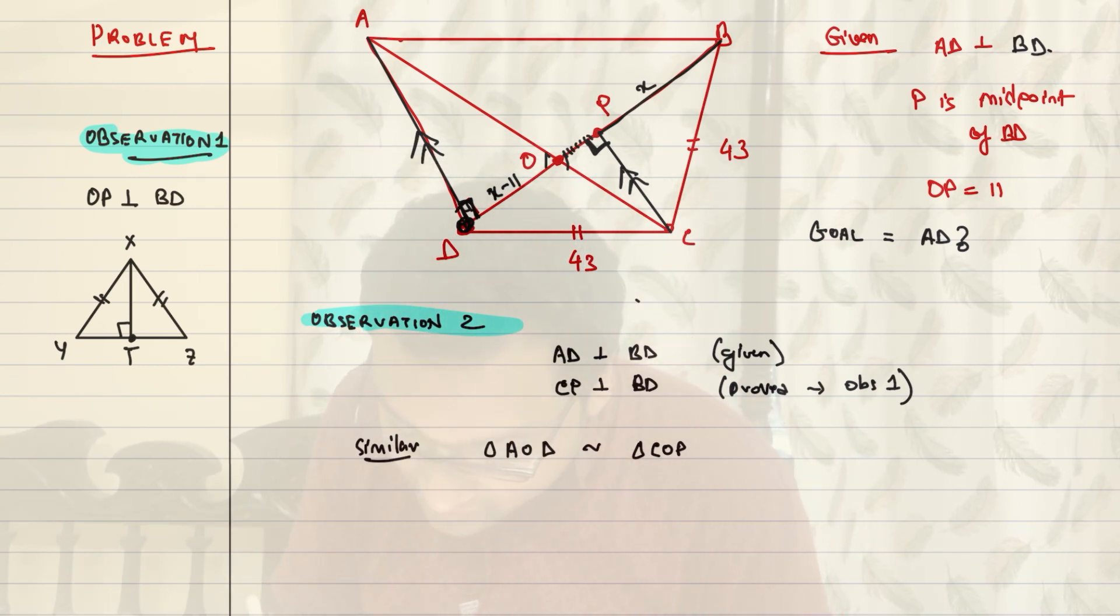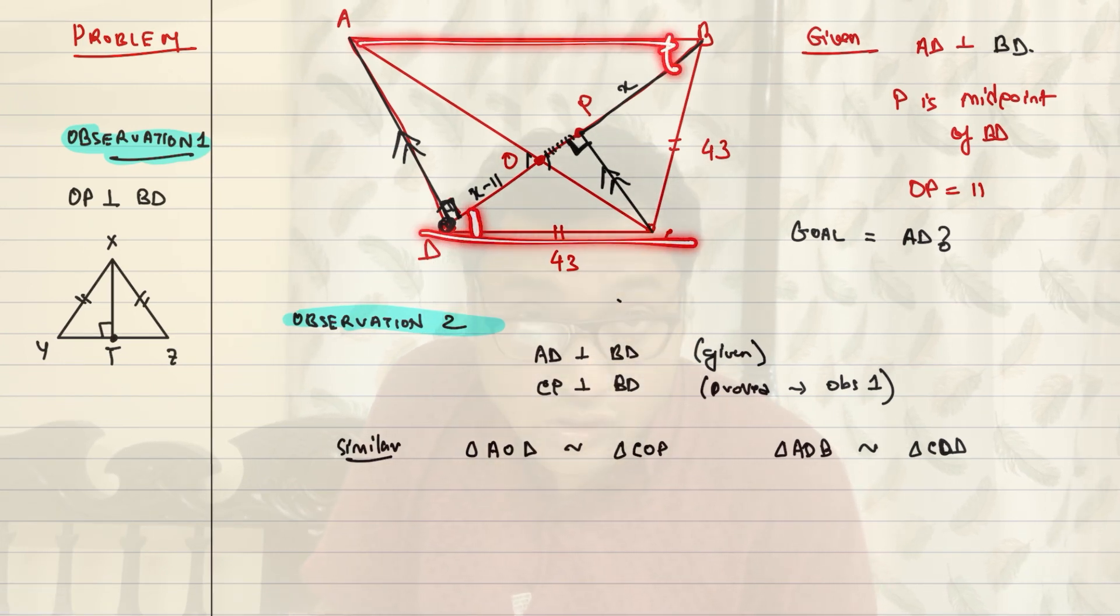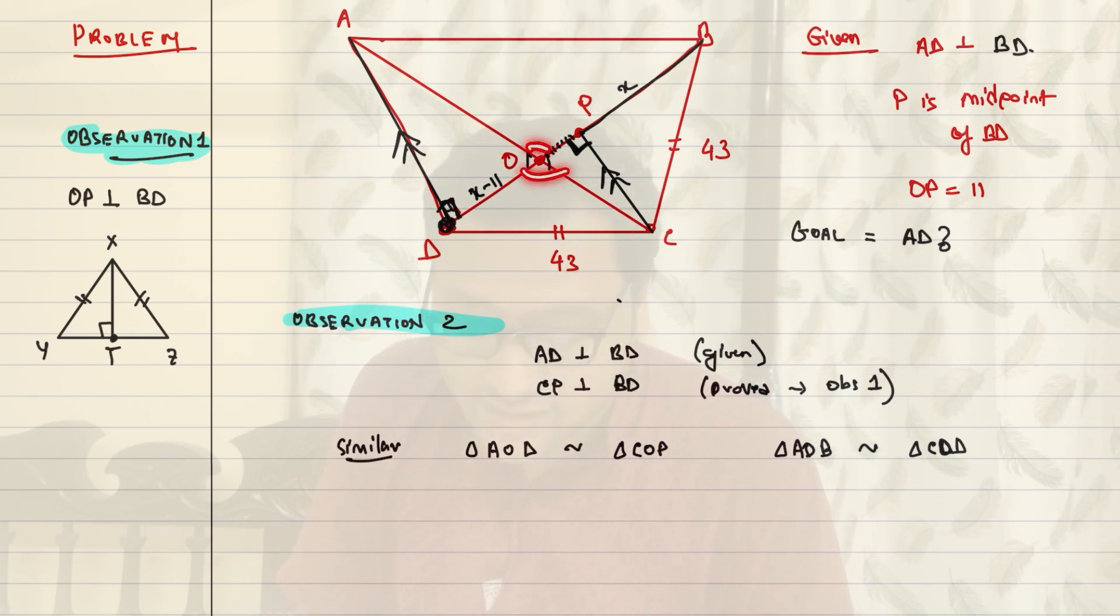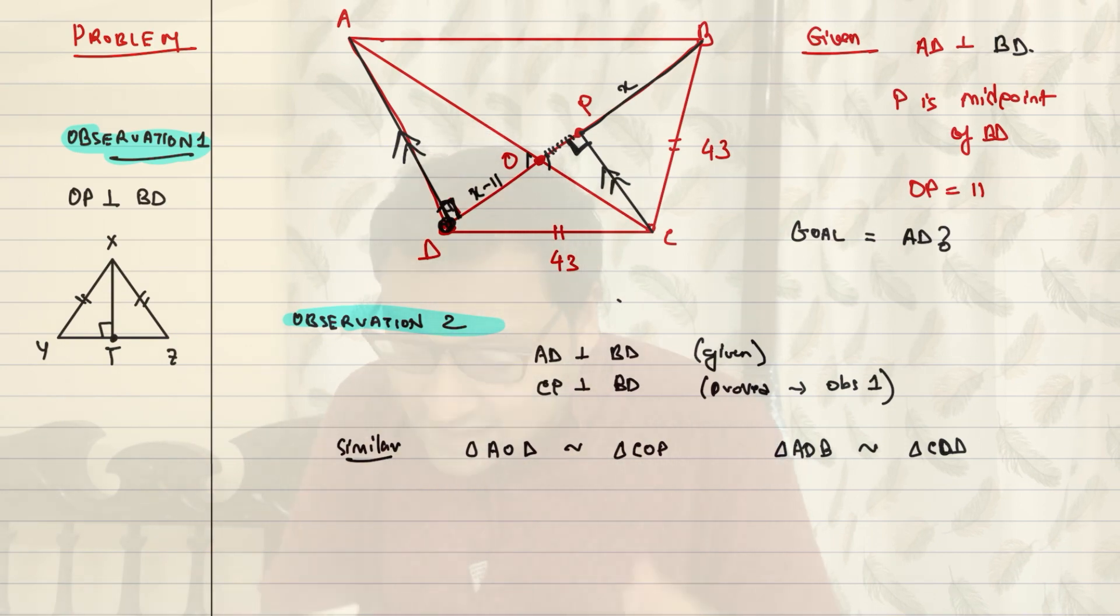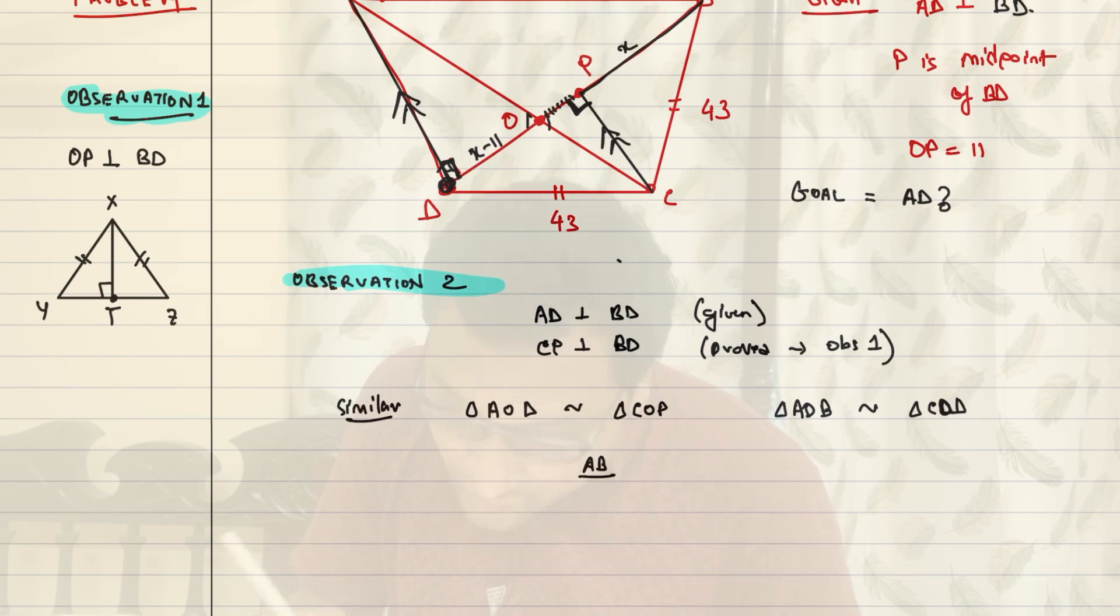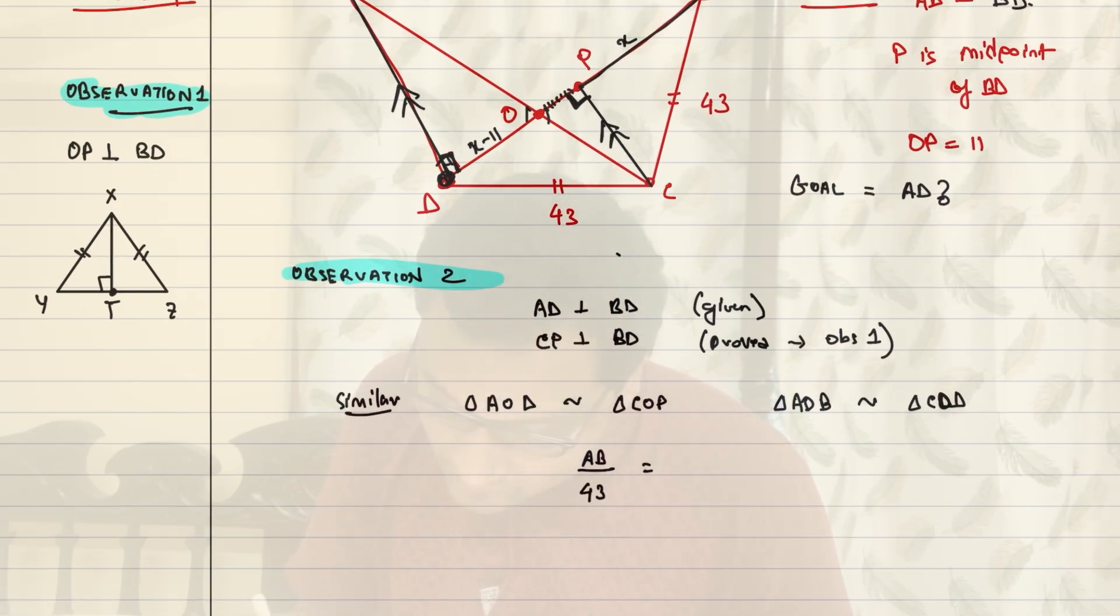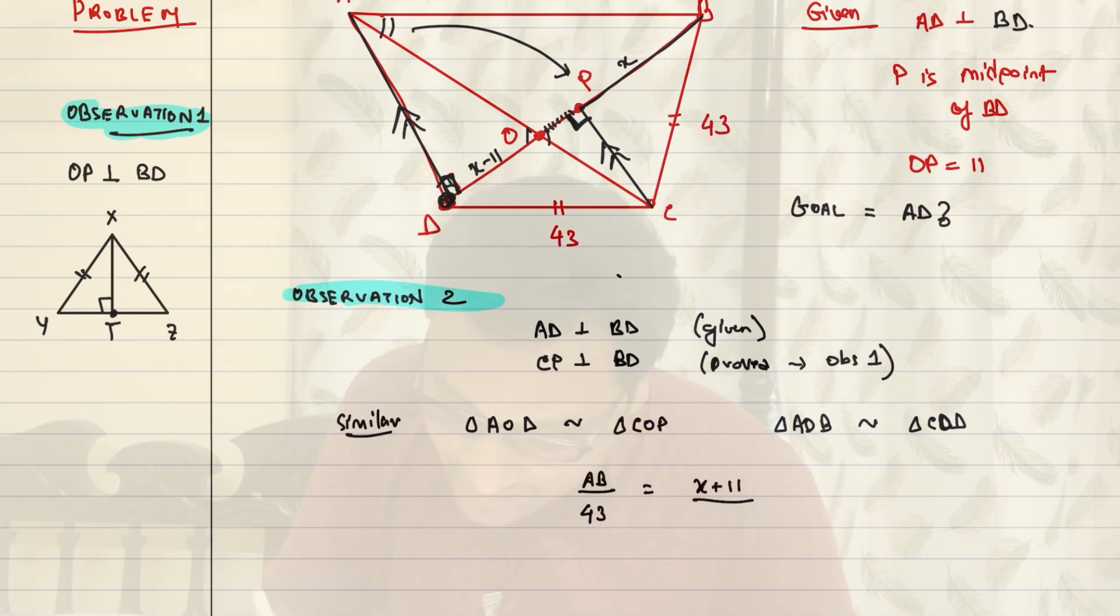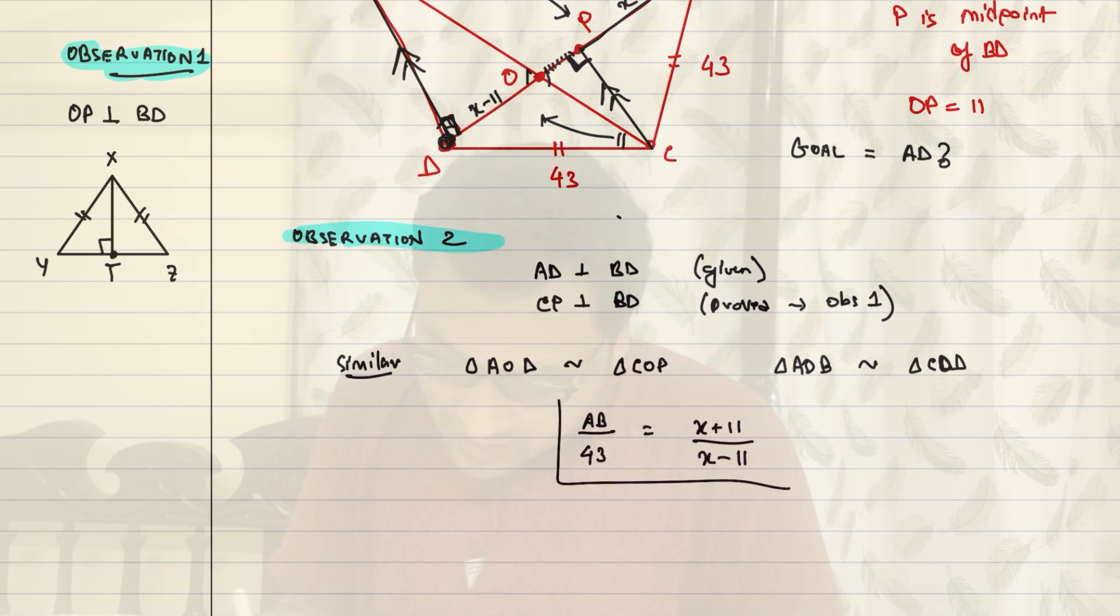So, we have another pair of similar triangles actually. It is triangle AOB is similar to triangle COD. This is another pair of similar triangles. Again, AB is parallel to CD. So, these two angles are equal alternate angles. These two angles are equal alternate angles and these two angles are equal vertically opposite angles. Again, that's why they are similar. So, now what you can say is that corresponding sides are proportional. So, AB over 43 is equal to X plus 11 over X minus 11.